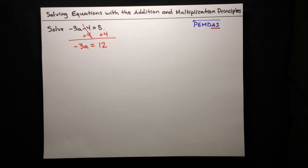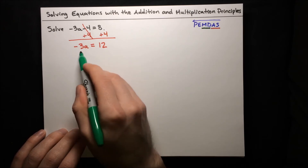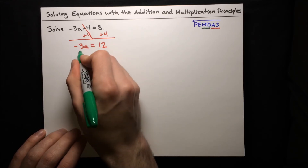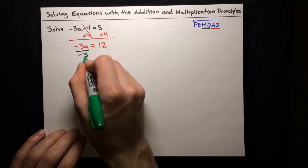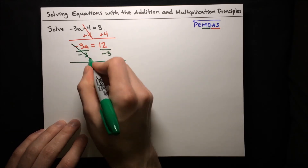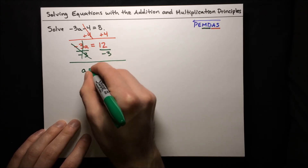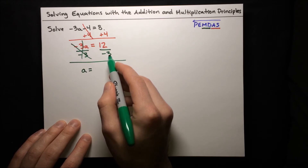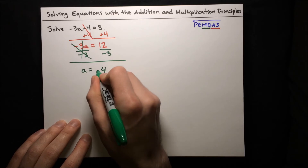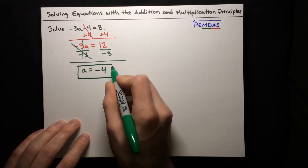Now we're ready to apply our multiplication and division principles. We want to get rid of that negative 3 on the a — we just want a by itself. So we'll divide both sides by negative 3 to cancel out that negative 3. The negative 3s will cancel out, and we've just got a on this side. a equals 12 divided by negative 3. Well, 12 divided by 3 is 4, and we've got a negative sign, so a is negative 4.